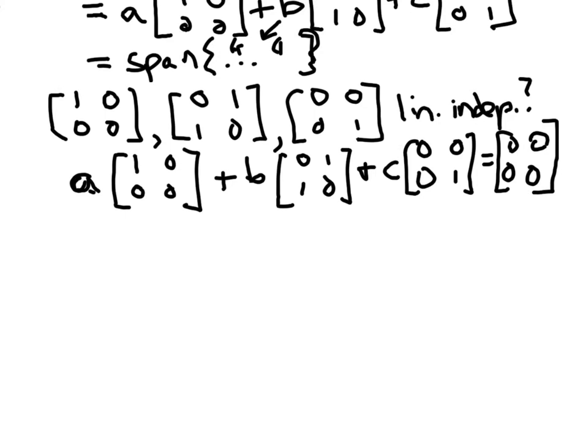then the vectors are linearly dependent. If the only solution to this is to have all the scalars equal to zero, then they're linearly independent. Okay, so if we do this addition here,